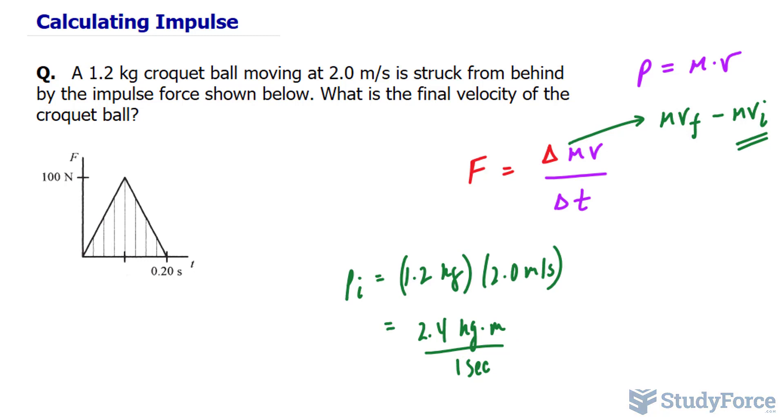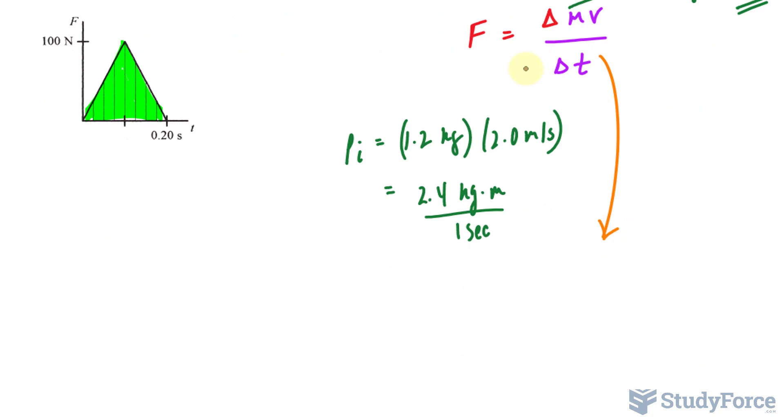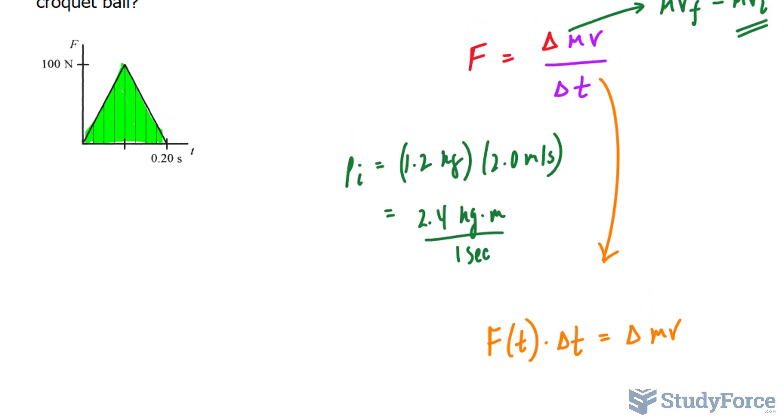It turns out that by finding the area underneath this triangle, you've actually found the change in momentum. Technically speaking, if I were to solve for the change in momentum and force was a function of time, we would have force as a function of time times delta T equals delta MV. Notice that I multiplied both sides of the equation by delta T to achieve this. By finding the area underneath here, we've found the left side of the equation.